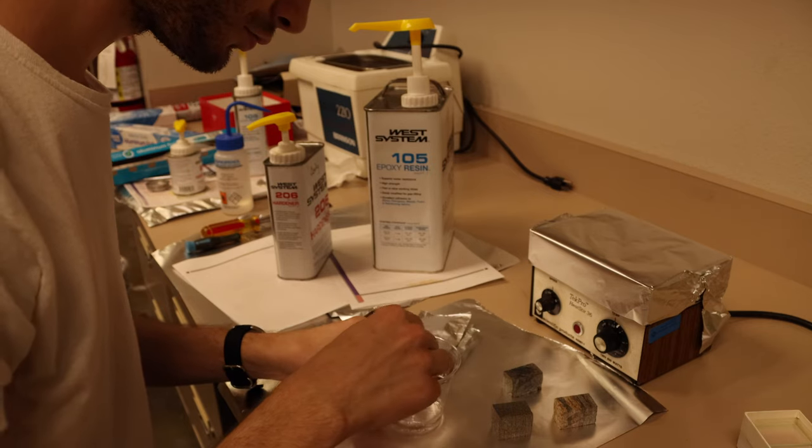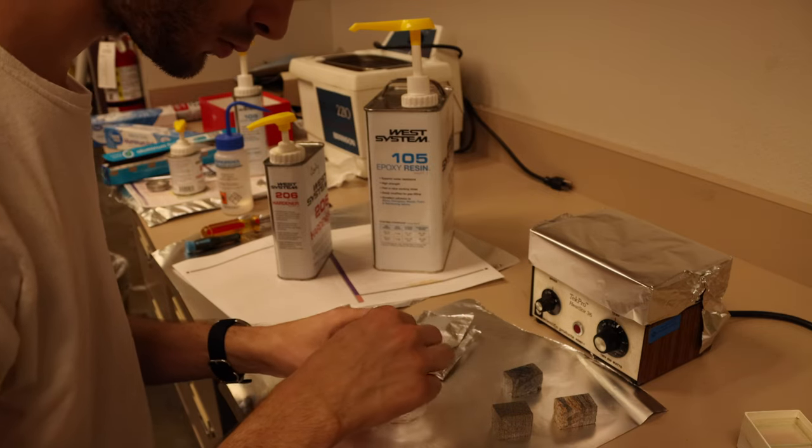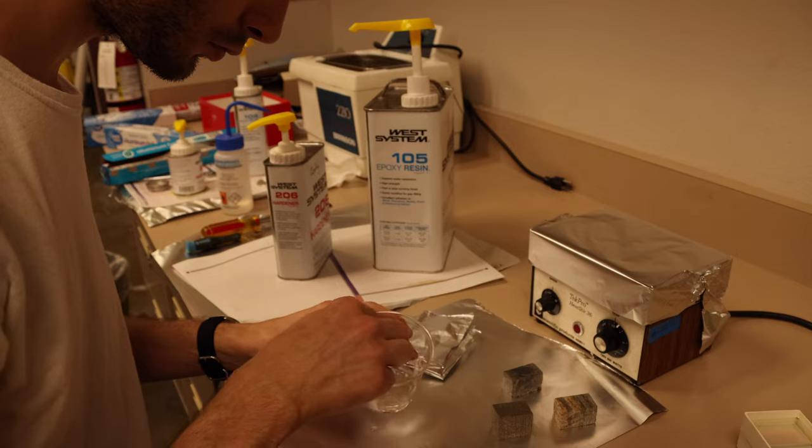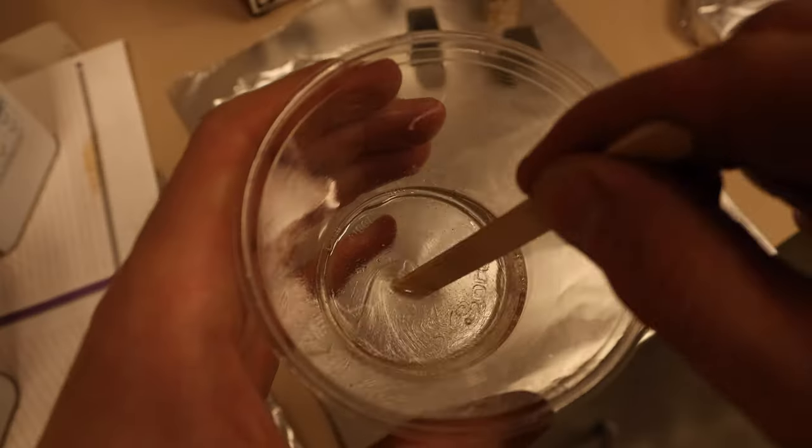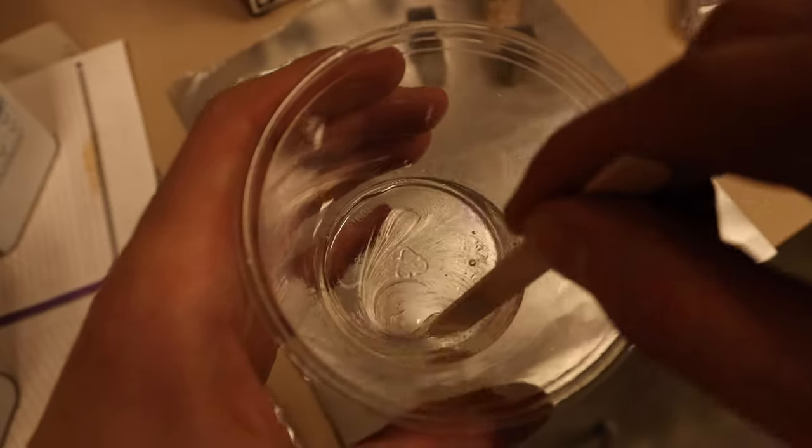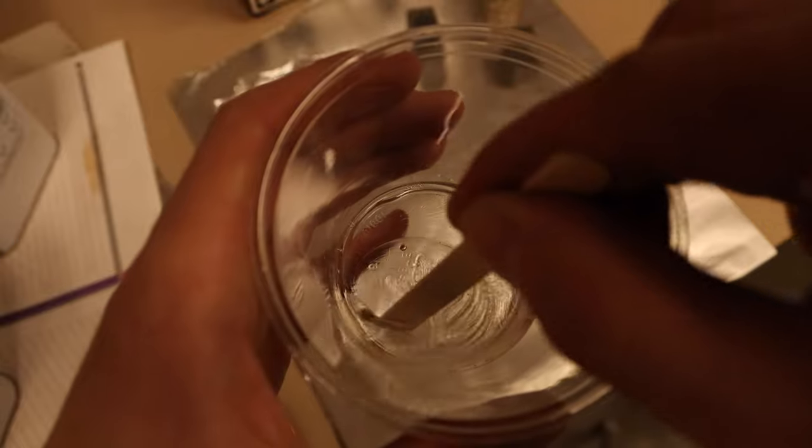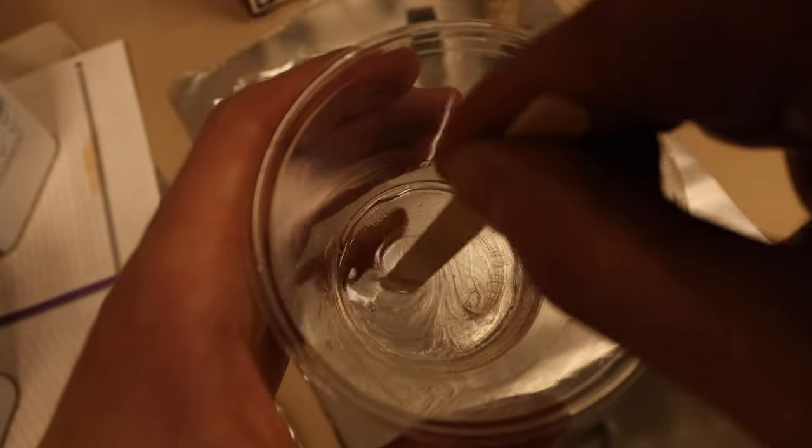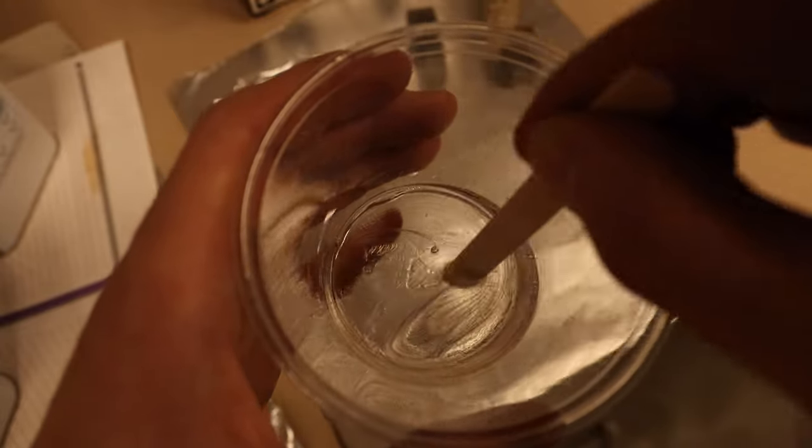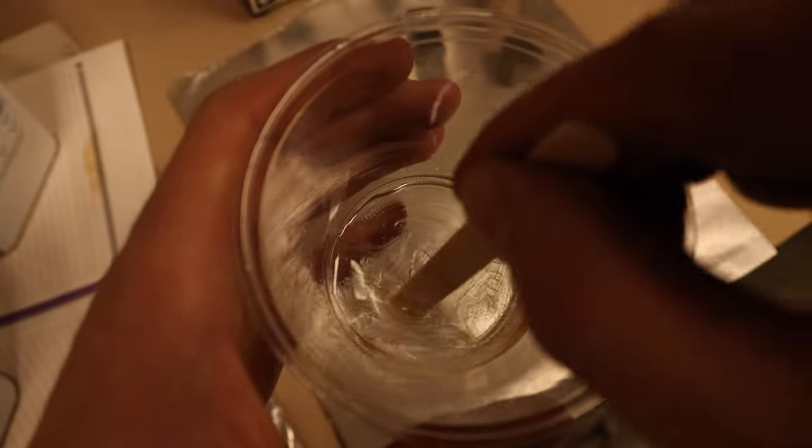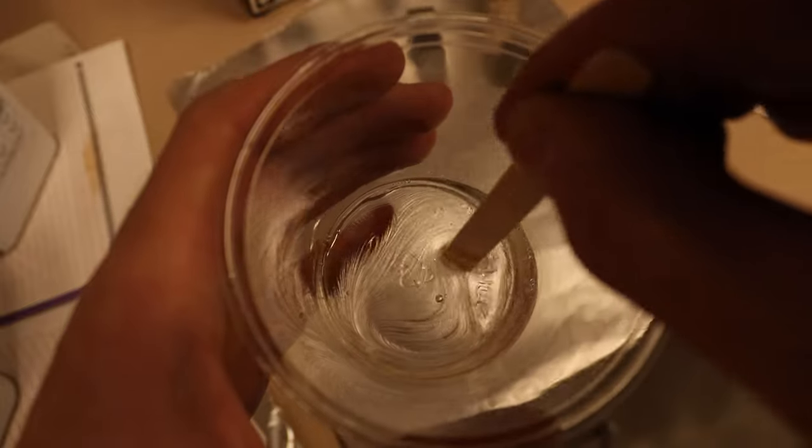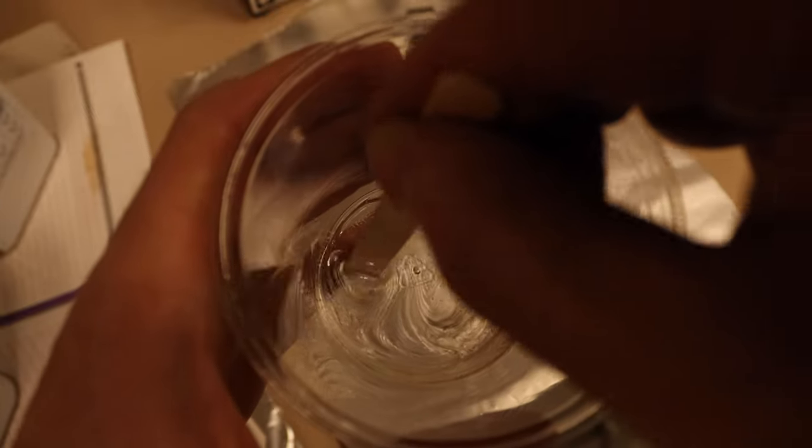Then mixing the epoxy. This is kind of crucial too. You don't want to really whip in a bunch of air into it needlessly. I'm sort of carefully doing figure eight motions and just folding it together until there's no streaks. So this will take a few minutes to do, but you want it to be nice and clear and it'll also kind of thin out a little bit.